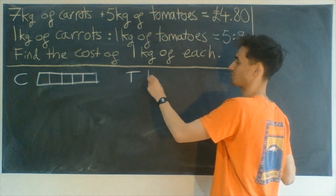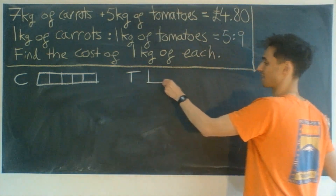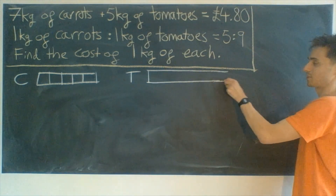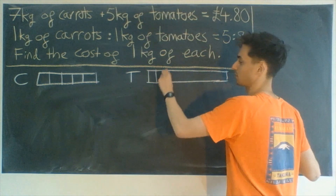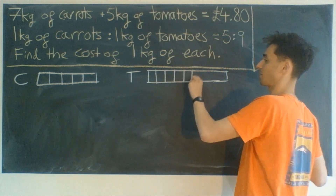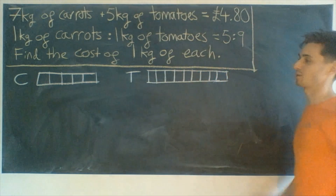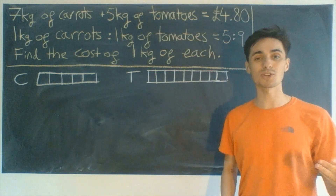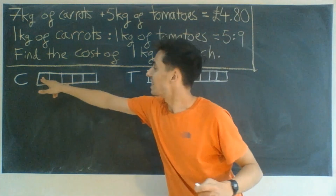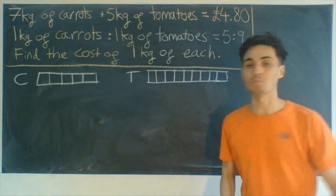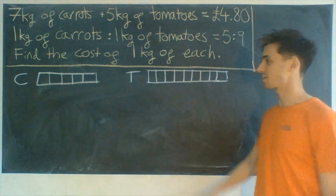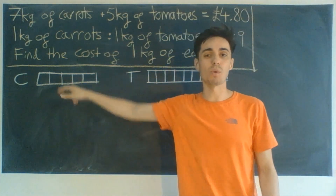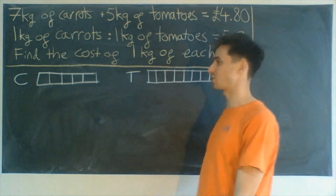This is where it's slightly more difficult to draw a good bar with 9. My bar models aren't perfect, but what should happen here is each of these boxes should be exactly the same size. So 1 box here is exactly equal to 1 box here — that's the whole point of ratios. We've drawn that picture of 5 to 9.